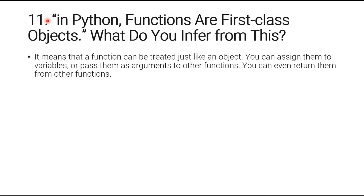Question number eleven: in Python, functions are first-class objects — what do you infer from this? It means that a function can be treated just like an object: you can assign them to a variable, pass them as an argument to another function, or even return them from other functions. That's why we call them first-class objects.